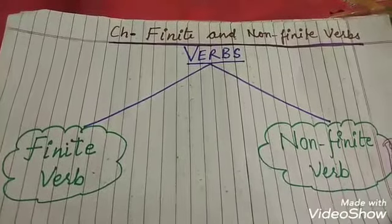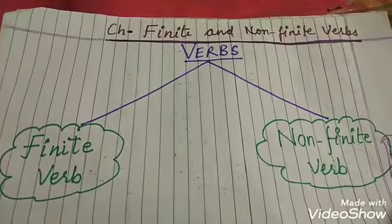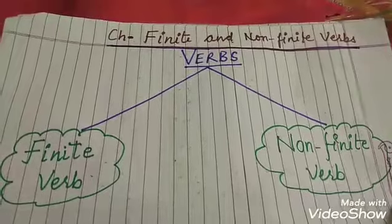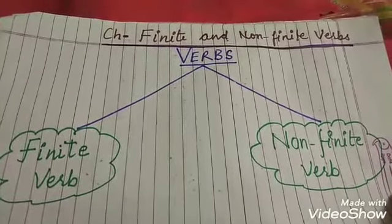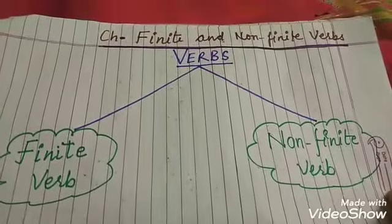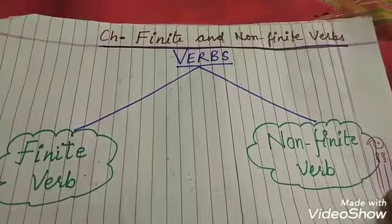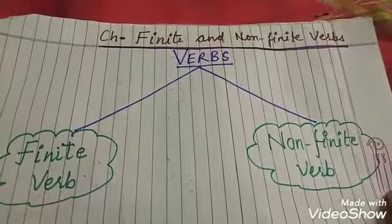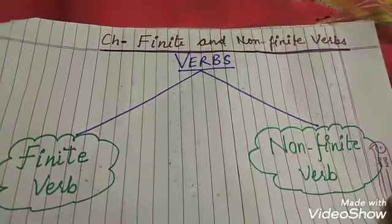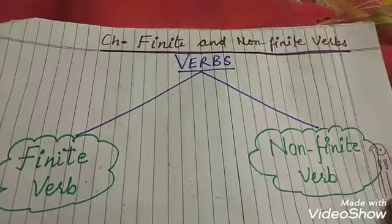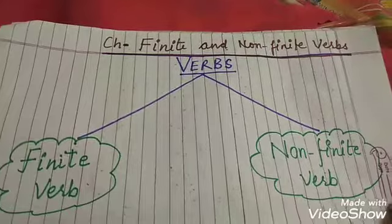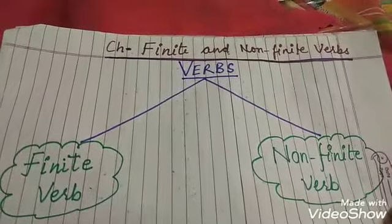So I hope you understood the concept of finite and non-finite verbs. Finite verbs means limited by number, person, and tense of the sentence. Non-finite verbs are not limited by number, person, and tense of the sentence. In other words, verbs with tenses are finite verbs and verbs without tenses are non-finite verbs.